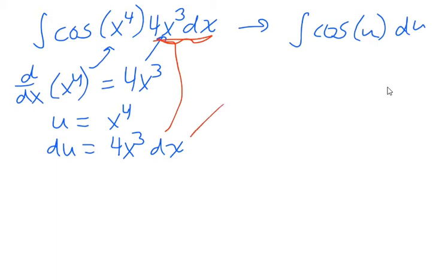So that's how I was able to immediately say, look, we have the integral of cosine of u du. The integral of cosine would just be sine of u, u in this case being x to the fourth.